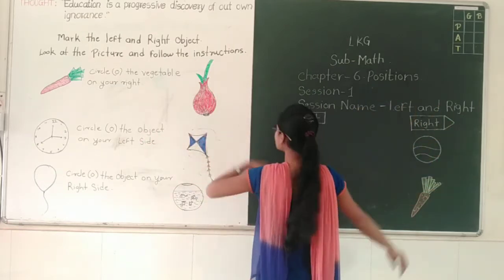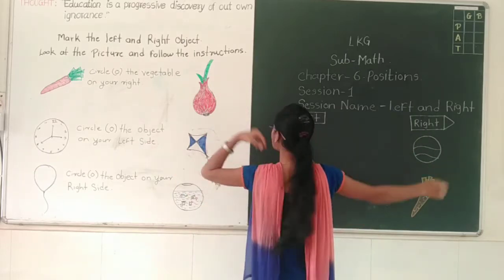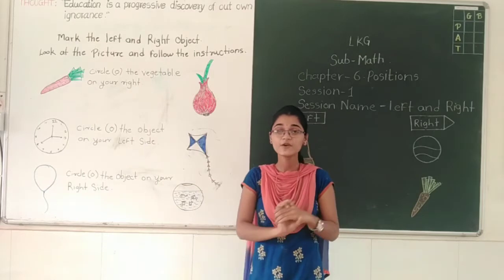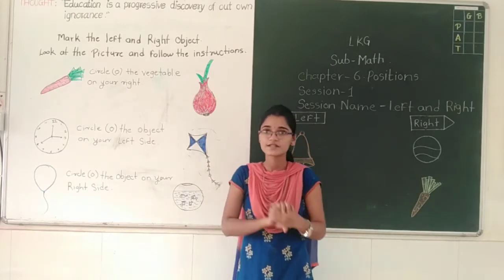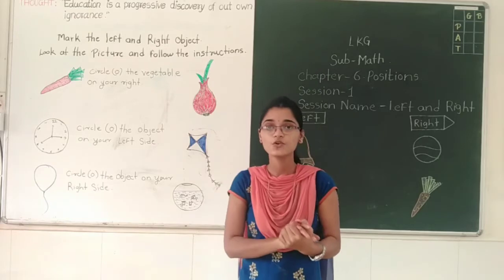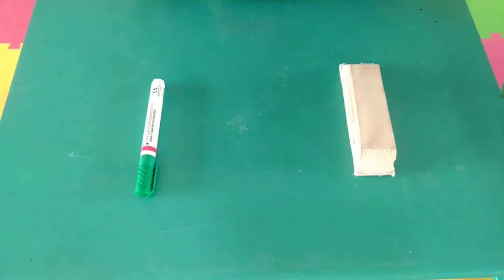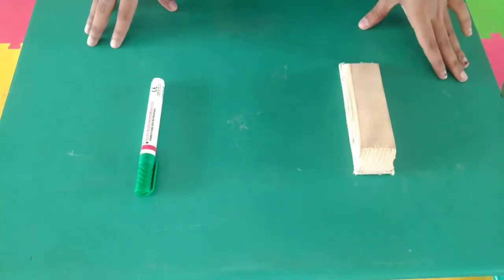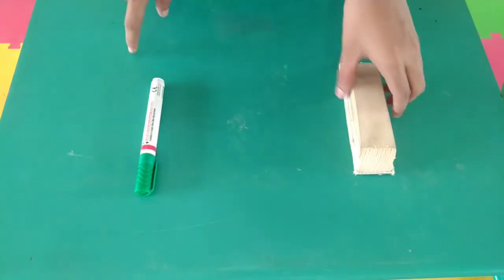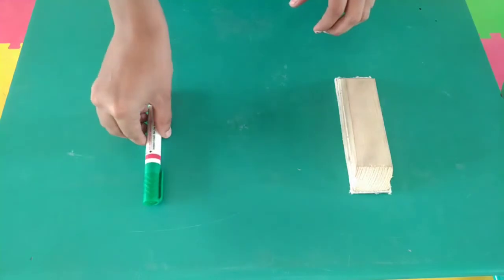Right hand, left hand, right side, left side. Now students, I have some objects here. I am going to show these objects. Now look here — I have placed two objects: one is a duster, one is a marker.